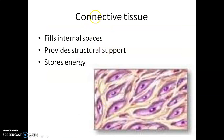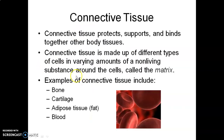We will learn about each one. First is connective tissue. It fills the internal space, provides structural support, and stores energy. Connective tissue protects, supports, and binds together other body tissues. It is made up of different types of cells and varying amounts of non-living substances around the cells,